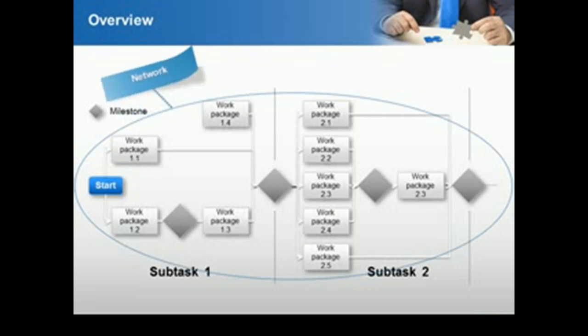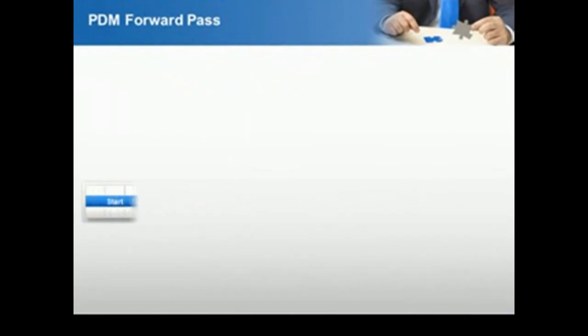By identifying the critical path, determining the total duration of a project can be made. Calculating the critical path is key during the planning phase because it identifies important deadlines and the activities which must be completed on time. Once a critical path is determined, a clear picture of the schedule becomes evident.